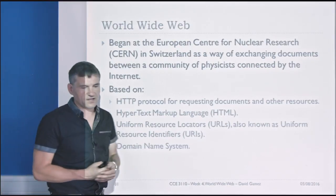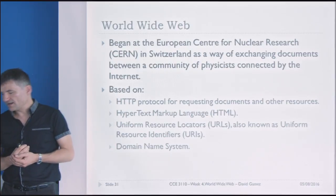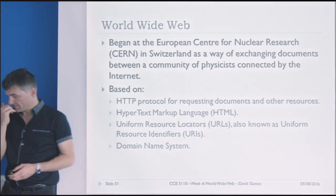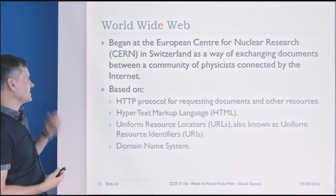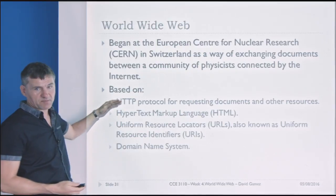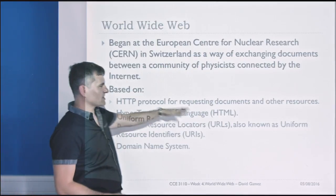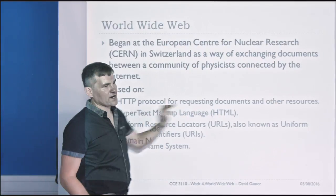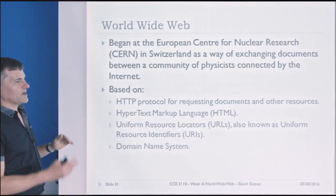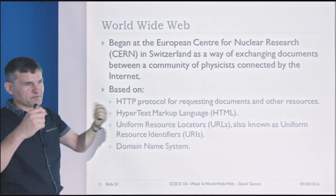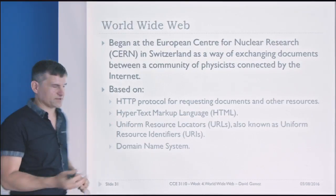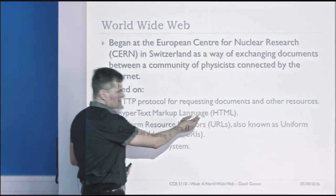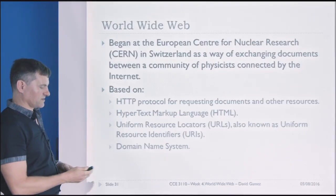Tim Berners-Lee is credited with inventing the World Wide Web when he worked at CERN. A bunch of physicists needed to move some data around, and he invented the World Wide Web to do that. The World Wide Web works through a combination of different technologies: the HTTP protocol, the Hypertext Markup Language which is used to format and structure documents, the URLs which locate documents using human readable identifiers like google.com, and the Domain Name System which does the mapping between URLs and the actual IP addresses of the documents themselves.